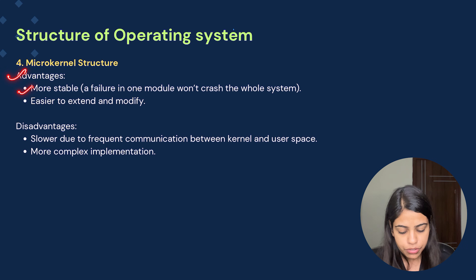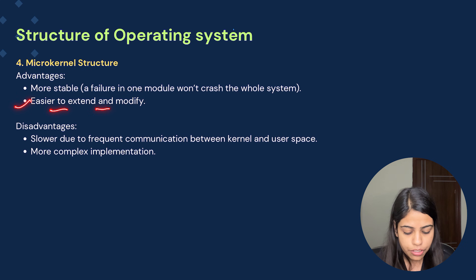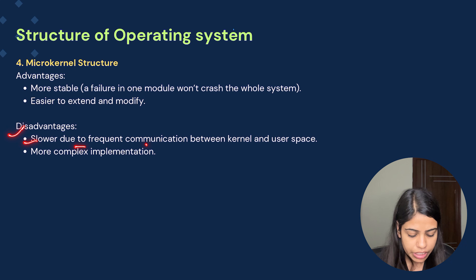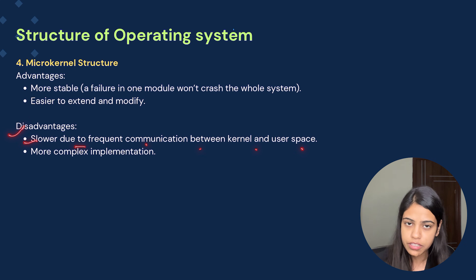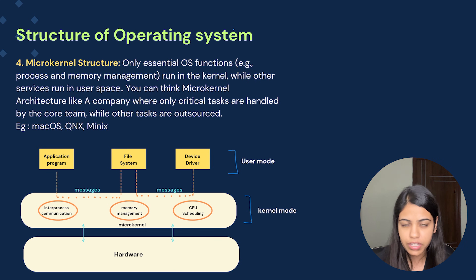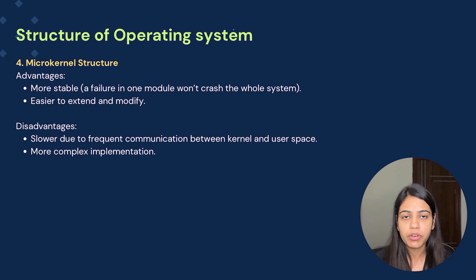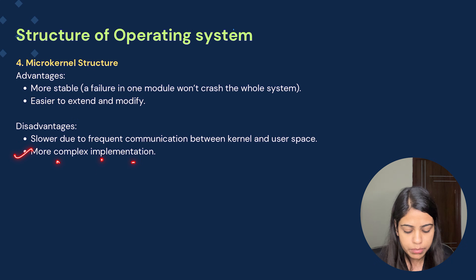The advantages of microkernel structure are: more stable, as a failure in one module won't crash the whole system, and easier to extend and modify. The disadvantages are: slower due to frequent communication between the kernel and user space via messages, and more complex implementation since we are reducing the number of components in the kernel.